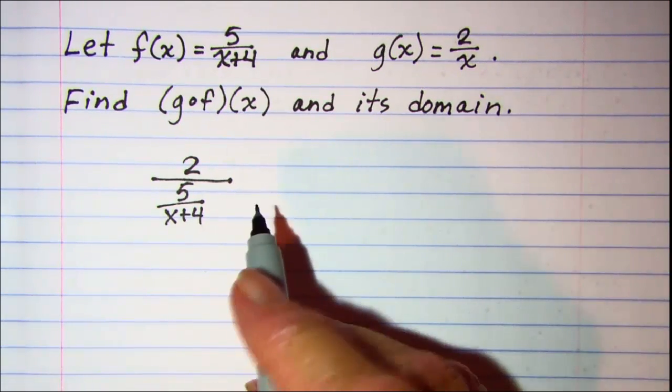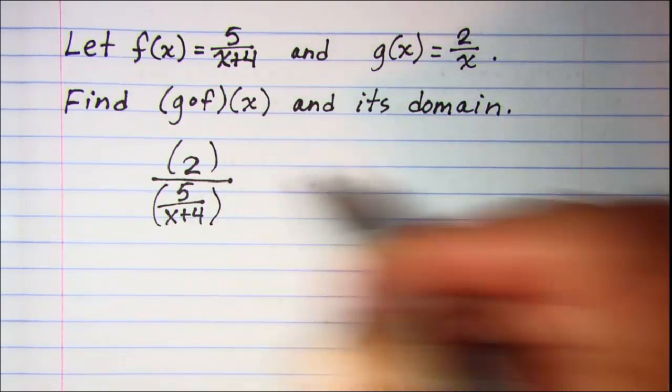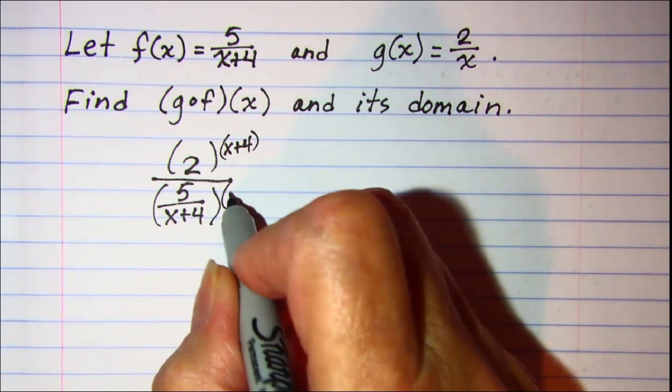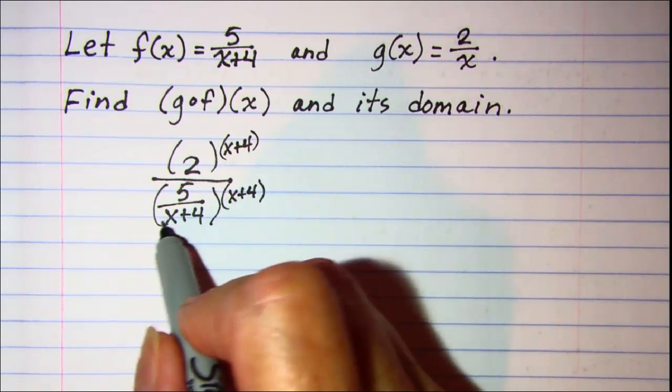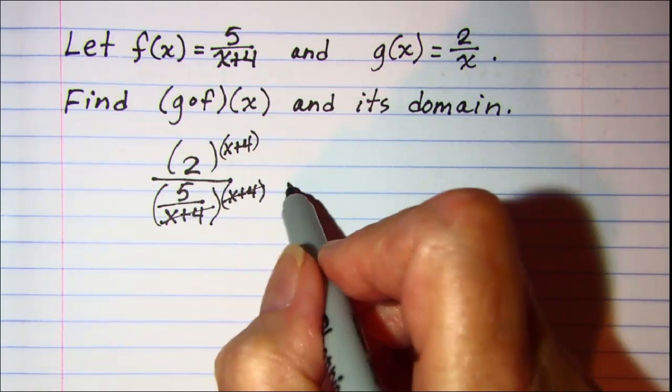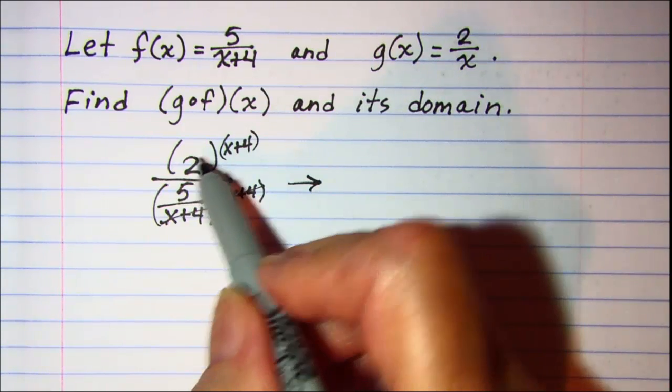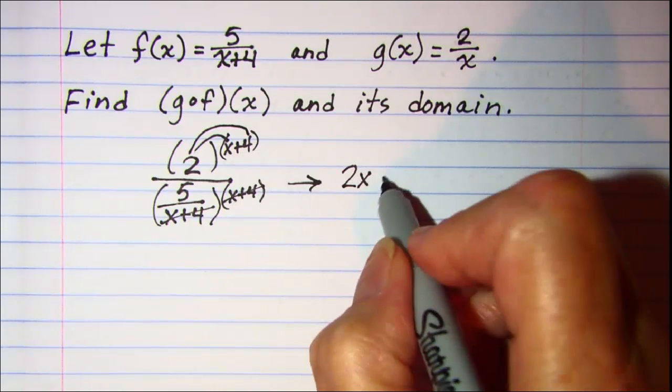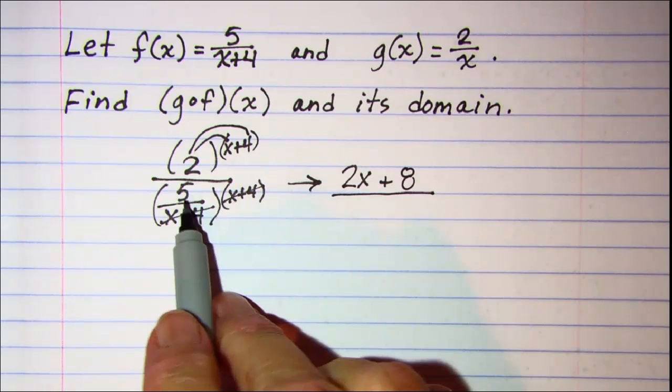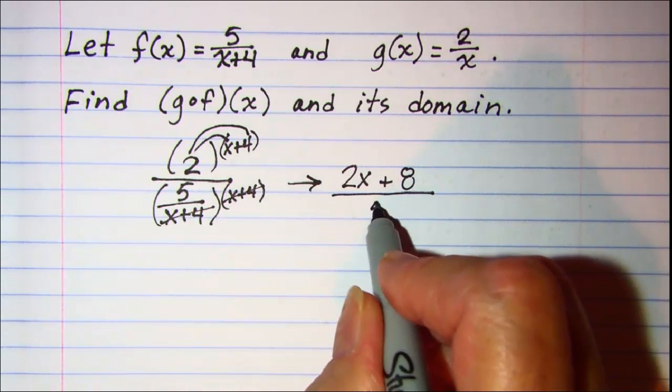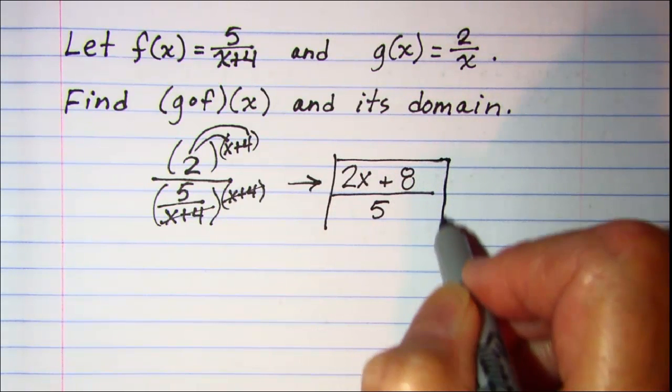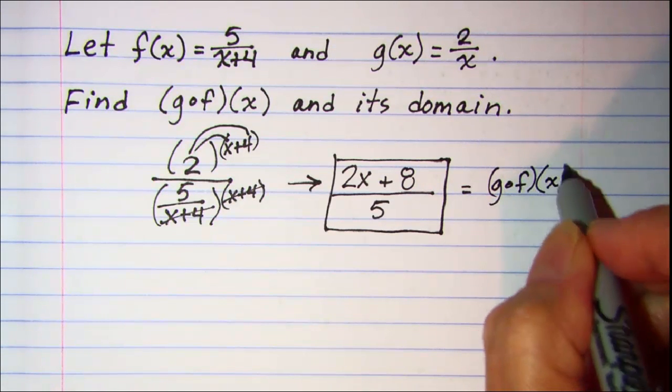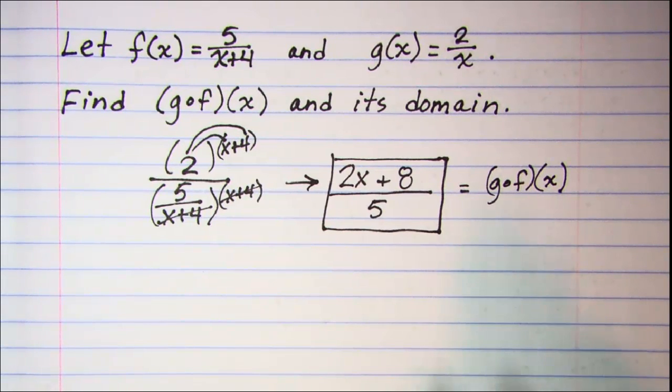We need to simplify this complex fraction. Let's multiply top and bottom by x plus 4. That'll cancel this off. So we have, let's distribute, 2x plus 8 over, and then all we have left here is the 5. So this is our composition function, and then we want the domain of f.